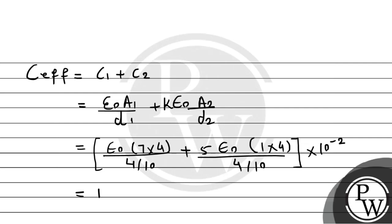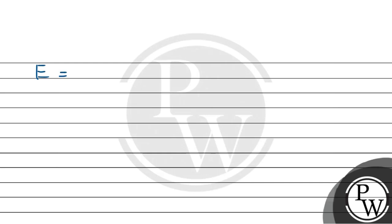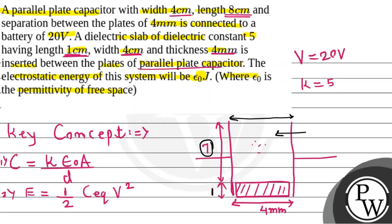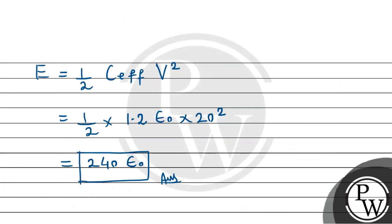From this, the equivalent capacitance comes out to be 1.2 epsilon-naught. Now using the energy formula: Energy equals one-half times C-effective times V squared. Substituting, this equals one-half times 1.2 epsilon-naught times 20 squared, which is 400. Half of 400 is 200, and 1.2 times 200 gives 240. So the required answer is 240 epsilon-naught joules. This is the electrostatic energy stored by the capacitor. I hope you understood well — best of luck, thank you.